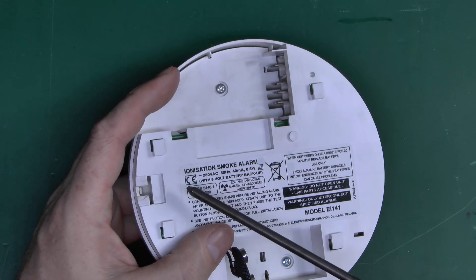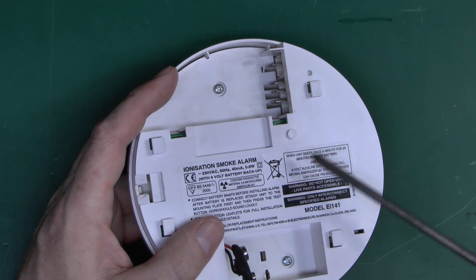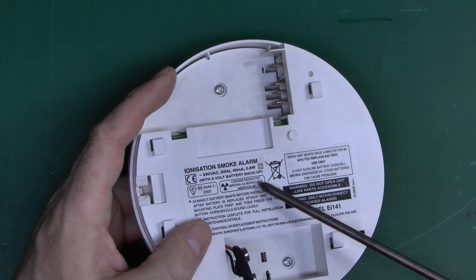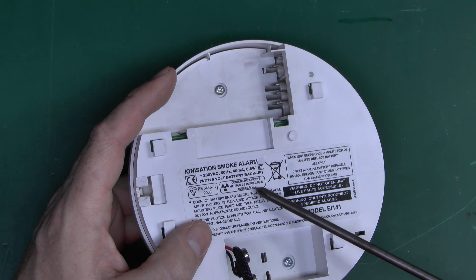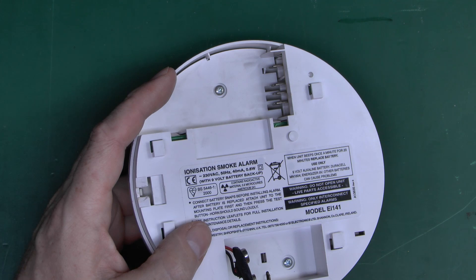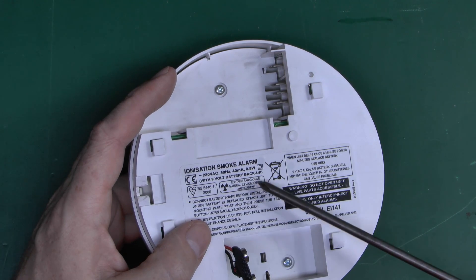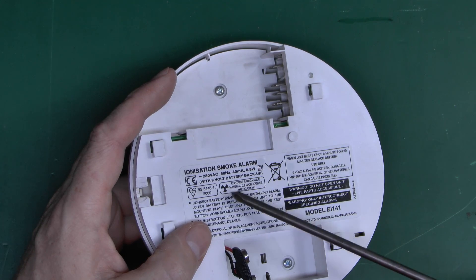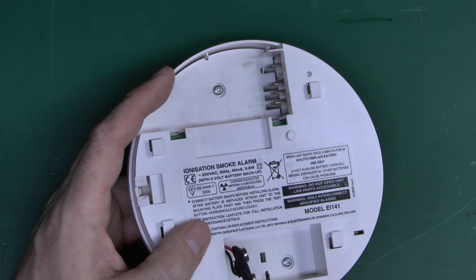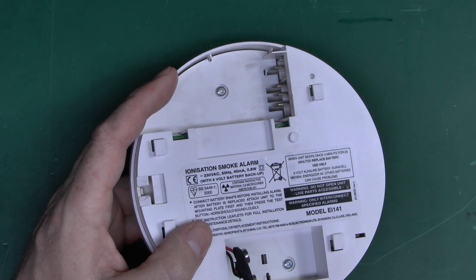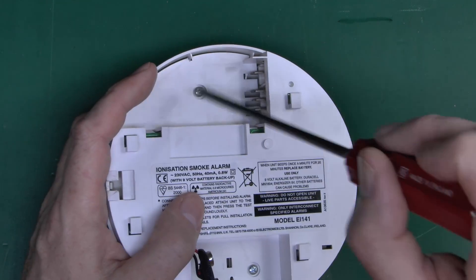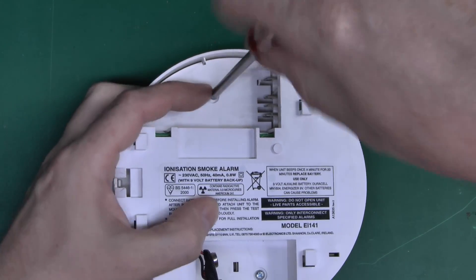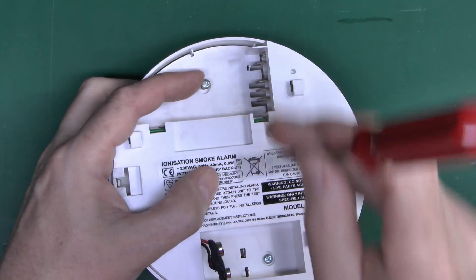Now this is an ionization alarm, and what this has inside is a very small amount of radioactive material. As it says here, it contains radioactive material, 0.9 microcuries of americium 241. Now yes it is radioactive, but the amount of actual radioactivity here is absolutely minute, plus it's also going to be contained within its own metal canister, so there's no danger of radiation or whatever leaking out. Now of course these aren't designed to be opened or taken apart, but so what, we're going to take it apart anyway and just see what's actually in it.